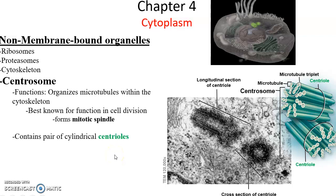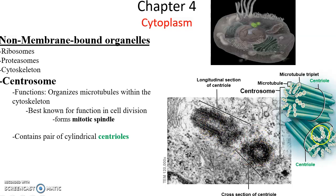The centrosome is another important organelle that does not have a membrane. Its importance is that it organizes and produces microtubules — without centrosomes there are no microtubules. Centrosomes are best observed in their function during cell division, where they form the mitotic spindle fibers that go out and move chromosomes. When you look at a centrosome, you see it has two sets of protein cylinders referred to as centrioles — a pair of centrioles found in the centrosome.